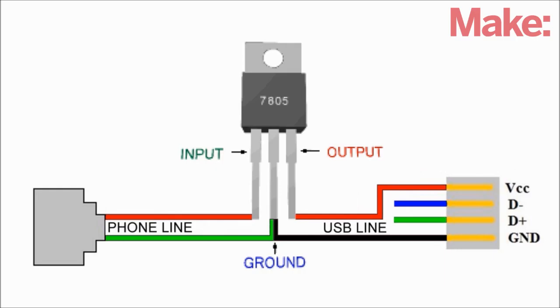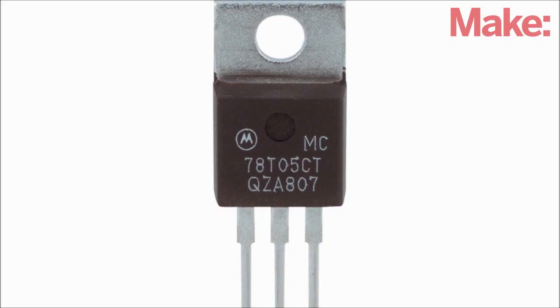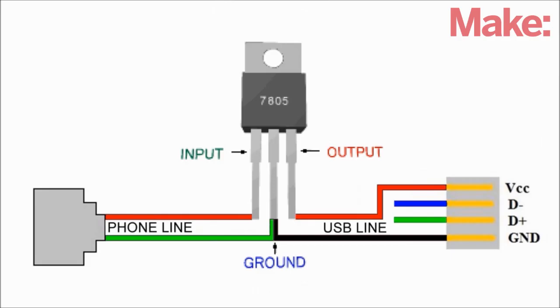This simple regulator circuit is able to safely convert the base signal on the phone line into something that you can use to charge your cell phone. However, many voltage regulators aren't able to handle the AC signal that you'd receive if the phone rang. So if you're worried that you might receive a call while the regulator's hooked up to the phone line, then you may want to add a diode to protect the circuit.